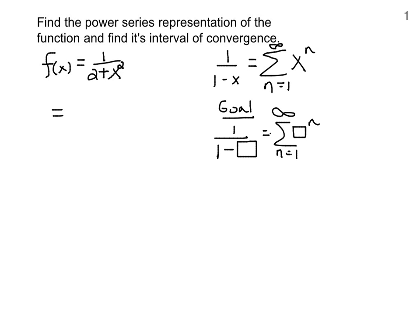We already have a 1 in the numerator. What we need is a 1 in the denominator, so we factor out a 2 from the denominator. This leaves us with 1 plus x squared over 2, and we write that as one half times 1 over 1 plus x squared over 2.